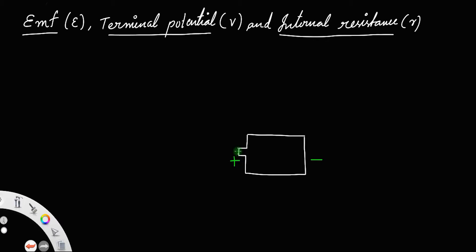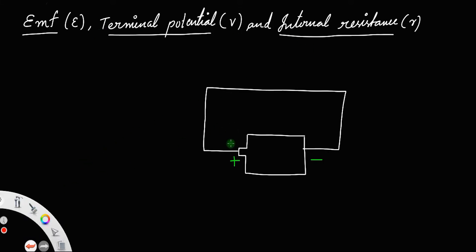Suppose I connect the cell to an external wire. You always have to connect a resistance across the wire, otherwise it will get short-circuited, but for simplicity I am just drawing a wire in order to understand the concept. Suppose there is a positive charge here, let us call it Q. This charge will be repelled by the positive terminal of the battery, move away from it, circulate through the circuit through this wire, and ultimately reach the negative side of the cell.